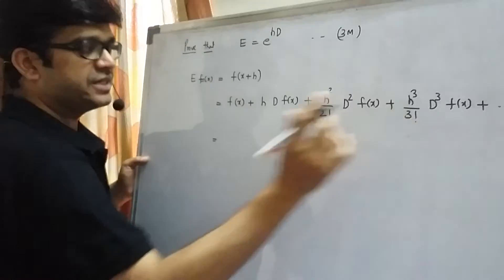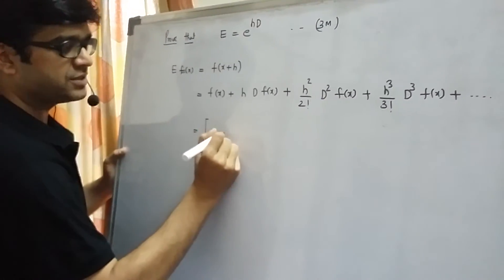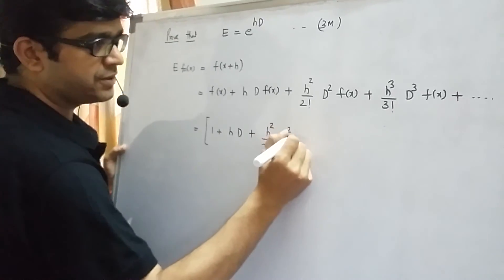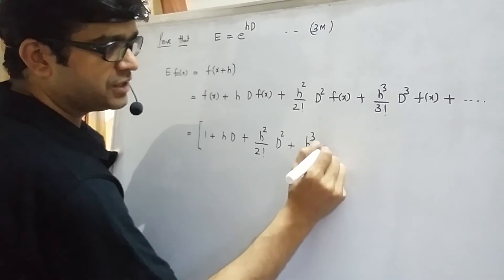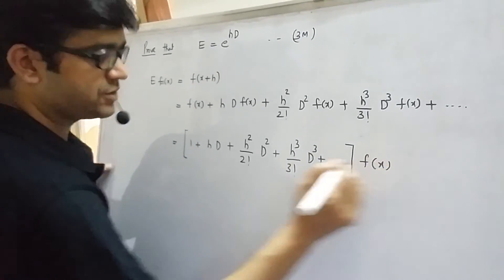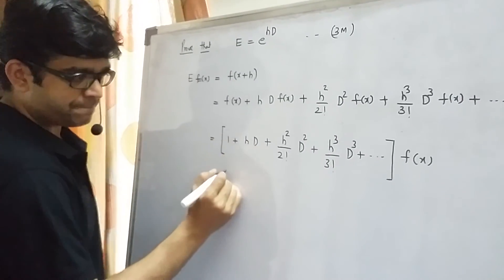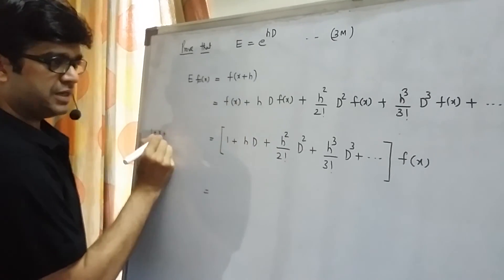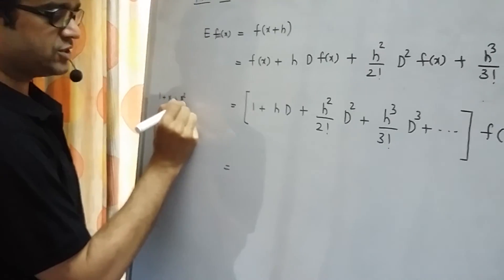What I can do is I can take f(x) common from each of these terms. So I get 1 plus h plus h into d, h square by 2 factorial into d square, h cube by 3 factorial into d cube so on and it is operating on f(x). Now if you look at this, it is like 1 plus x plus x square, x square by 2 factorial and so on where x is nothing but hd.